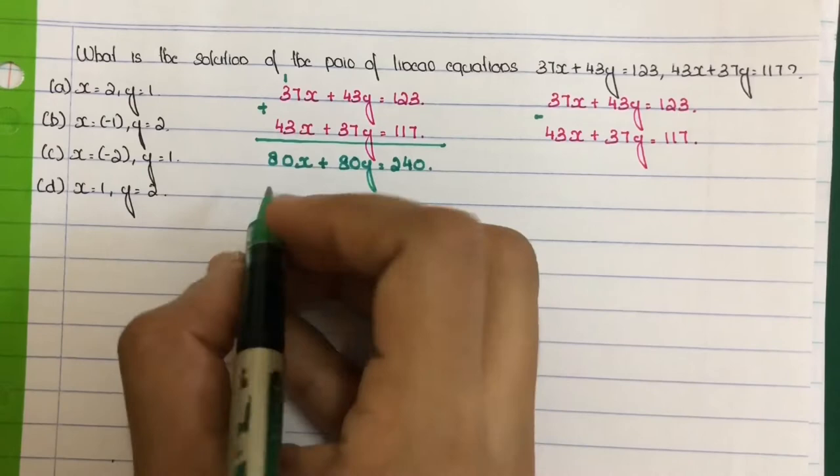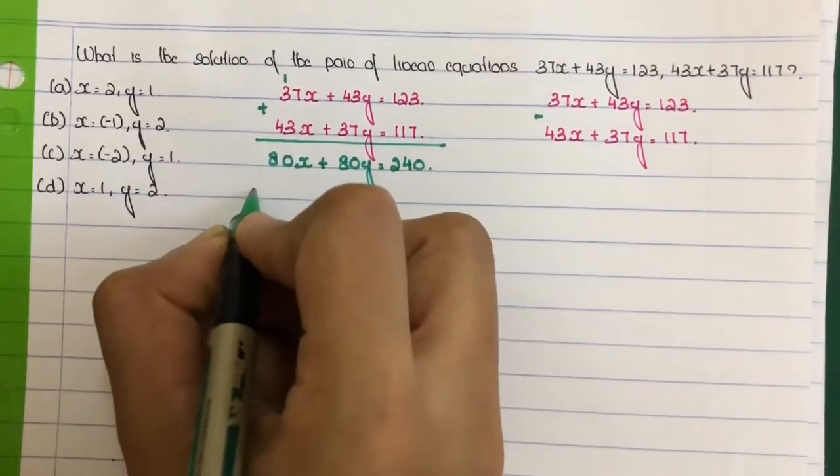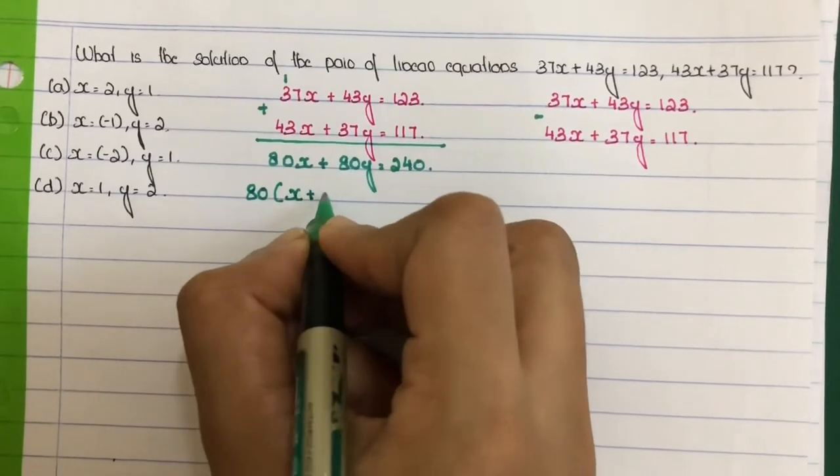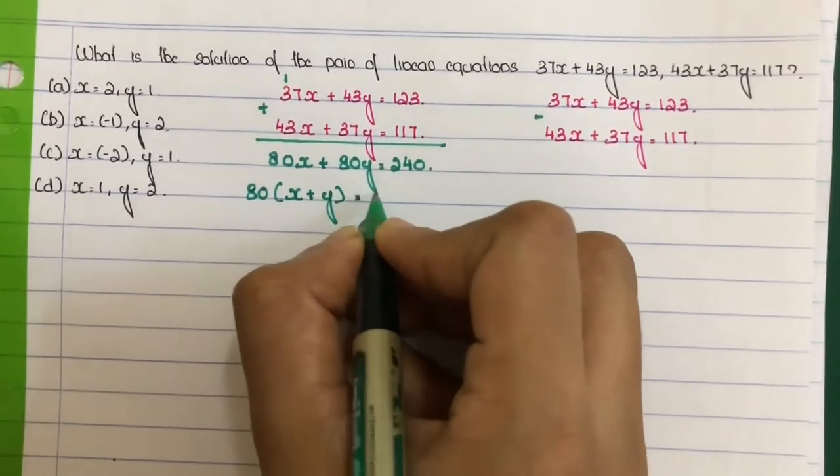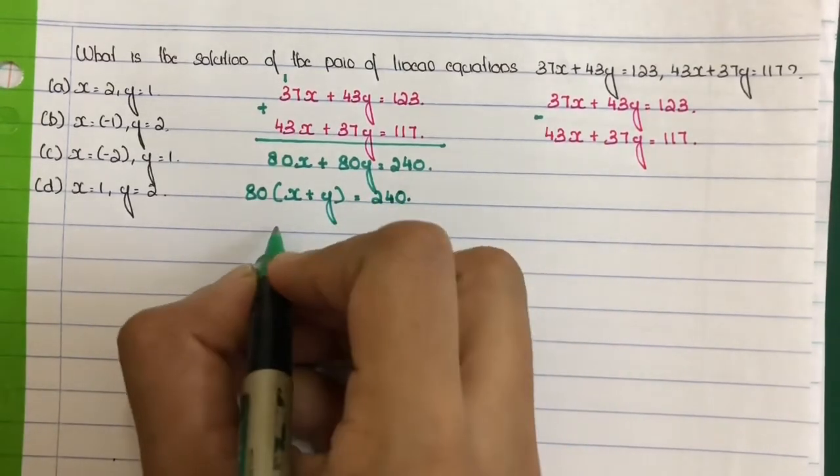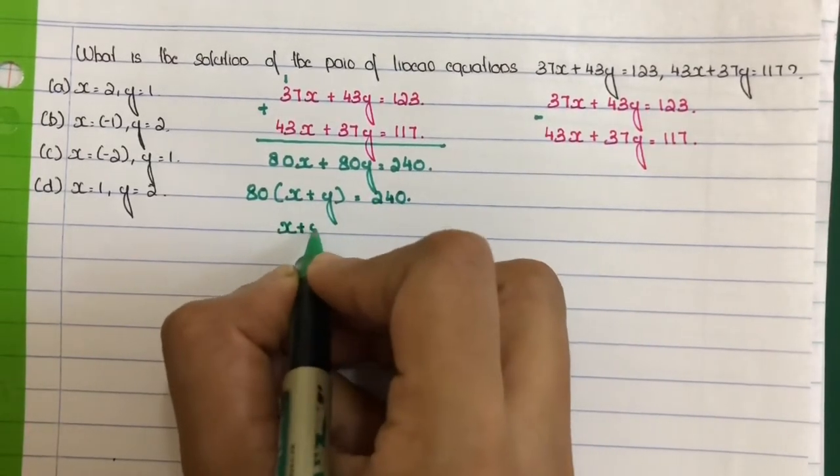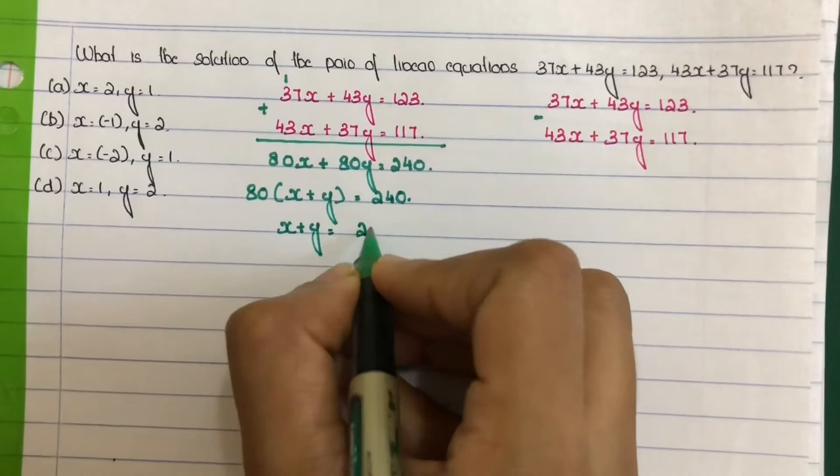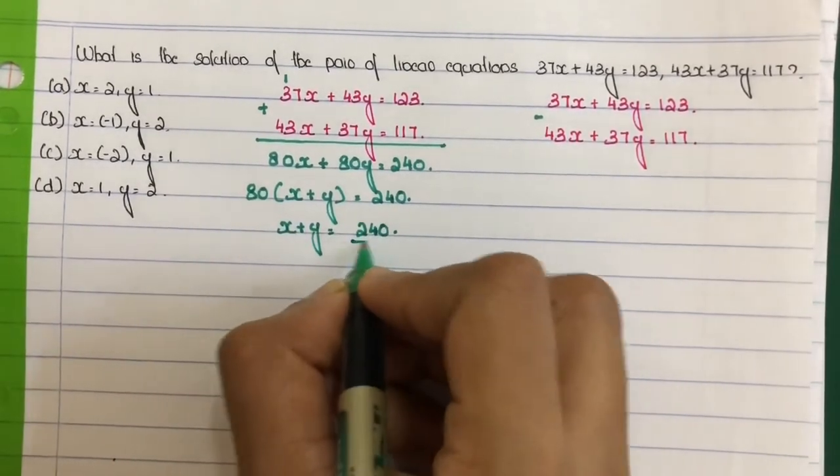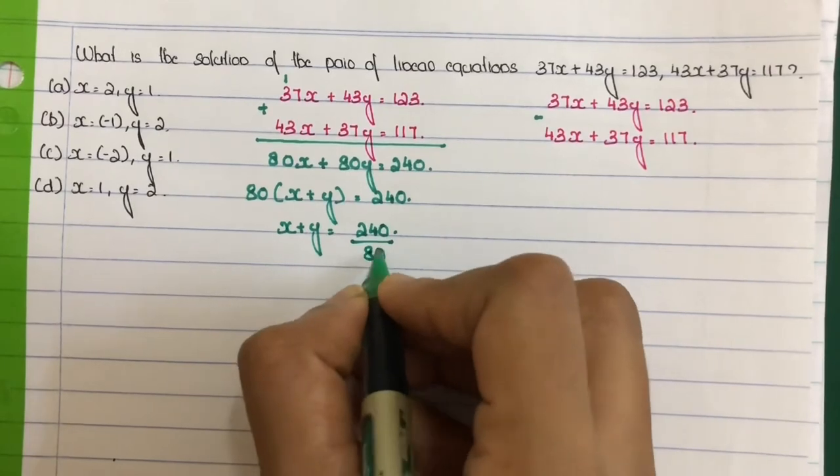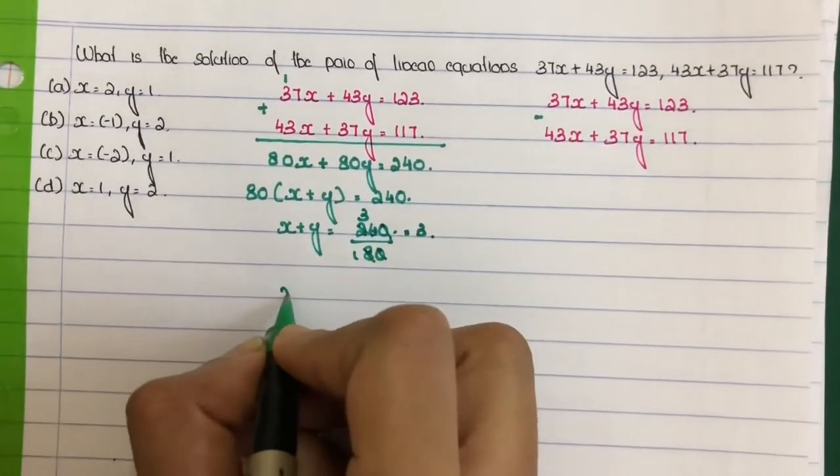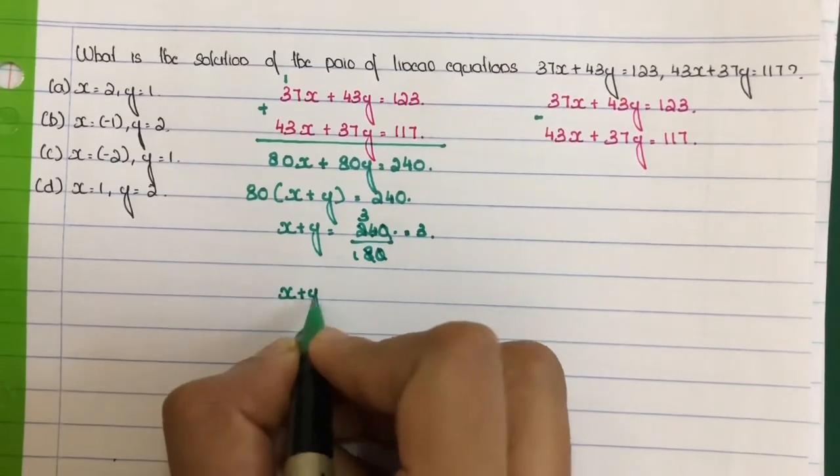We are going to convert it using the factoring formula. Take 80 as common factor outside: 80 times (x plus y) is equal to 240. Next, divide both sides by 80. That is x plus y is equal to 240 divided by 80, equal to 3. So x plus y is equal to 3.